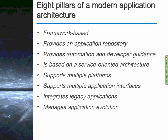Our architecture has got to support multiple platforms and multiple application interfaces, and it needs to give us the capability to take legacy applications and embed them in this integrated user interface and navigational capability. Finally, this architecture can't be a static one-shot — it's got to enable us to manage application evolution. That means we need to be able to change the application, manage what platforms it runs on, and what technology it exploits. You'll find on the Lancer website a white paper I wrote about modern application architecture that goes into this in more detail.